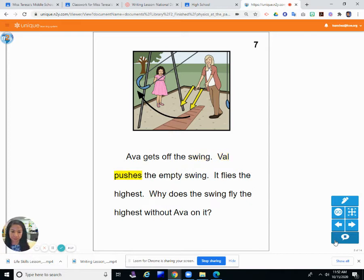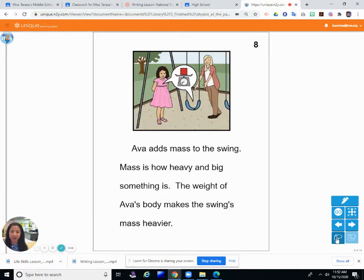Ava gets off the swing. Val pushes the empty swing. It flies the highest. Why does the swing fly the highest without Ava on it? So Ava's not on the swing and Val pushed it and it flew higher. Why do we think that? What do you think? Let's see if it tells us on the next page.